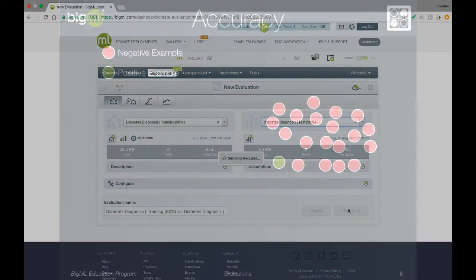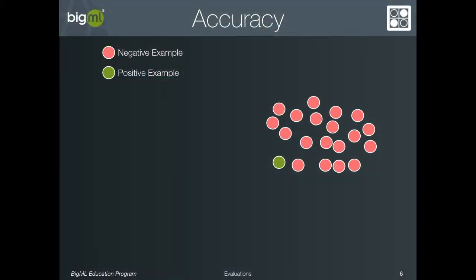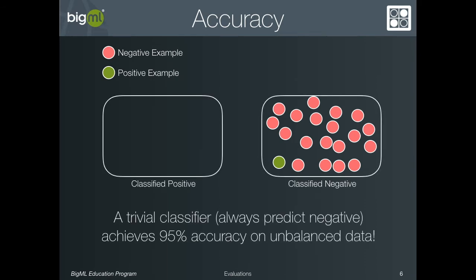Before we view this evaluation, let's discuss some of the pitfalls of evaluating classifiers. One straightforward way to measure the quality of your classifier's predictions would be to simply report the percentage of the time its predictions are correct — the so-called classifier accuracy. This number, however, can sometimes be misleading. If your dataset is highly imbalanced, so that 95% of the instances have the same class, you could reach 95% accuracy by always predicting that class.